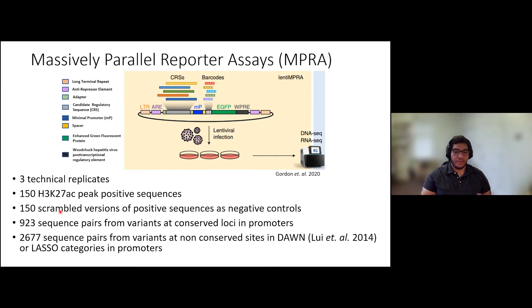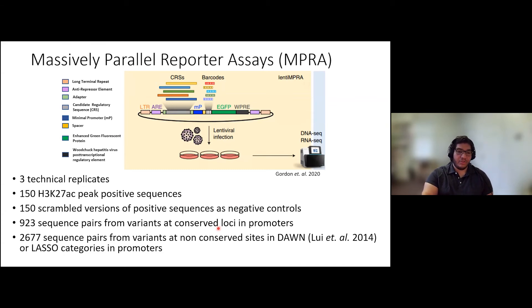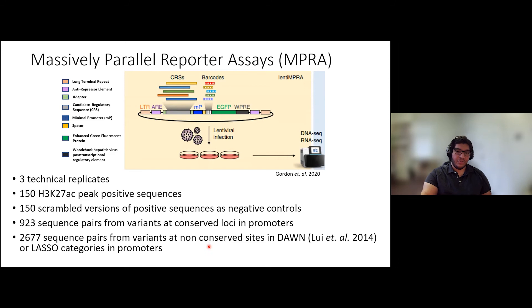For the design variants, we have 923 sequence pairs from promoters found at conserved loci sites — sites more intolerable to evolutionary mutation and therefore more likely to be deleterious if changed. We also included 2,677 sequence pairs from promoters found by DAWN or LASSO categories. DAWN is a neural network prediction model and LASSO is a regression prediction model; both predict which variants could be affecting the autism phenotype.